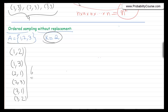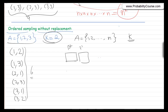What is the general formula for this scenario? If I have a set A with n elements — let's call them 1 through n — and I want to sample from that set k times, how many different possibilities do I have? Let's say this is my first element, this is my second, and up to the last one, the kth one. How many possibilities do I have for the first choice? There are n elements in the set, so there are n possibilities.